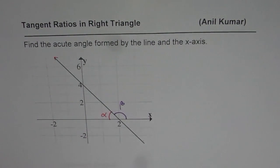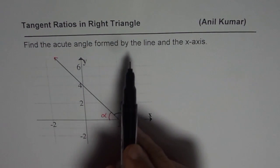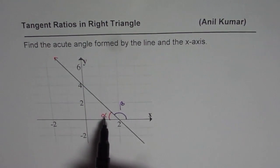Now the question here is to find the acute angle formed by the line and x-axis, that means this angle alpha. How are you going to find that?